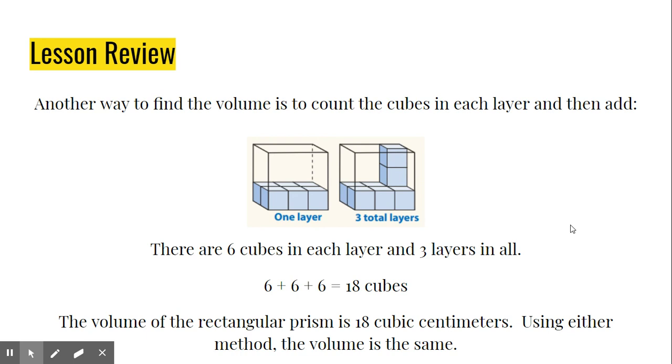So instead of counting them individually, another technique is to count one layer. For example, we could figure out one total layer. We know that one layer would have six cubes, and then we see there's three layers, so it would be 6 plus 6 plus 6, which gives us 18 total. That's another way to find your answer.